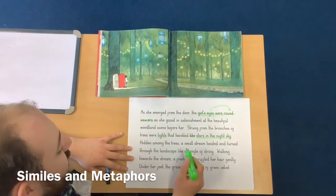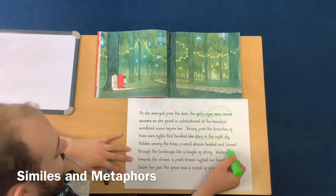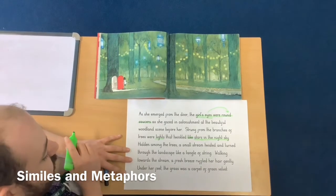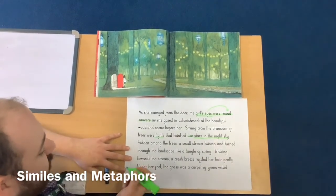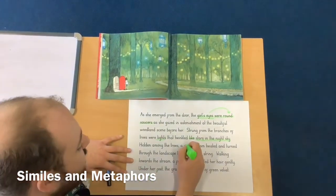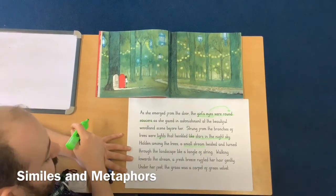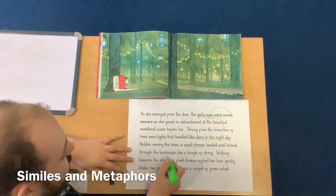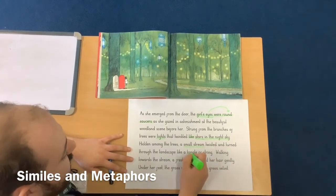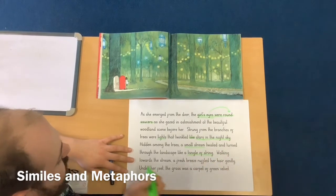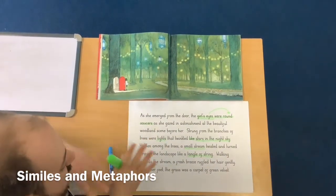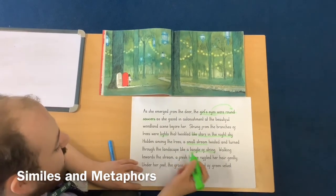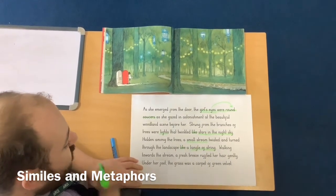Let's take a look at the next sentence: 'Hidden among the trees, a small stream twisted and turned through the landscape like a tangle of string.' What a lovely sentence. A small stream is being compared because it twists and turns through the landscape like a tangle of string — compared to a tangle of string. The word that tells us it's a simile is again 'like'.